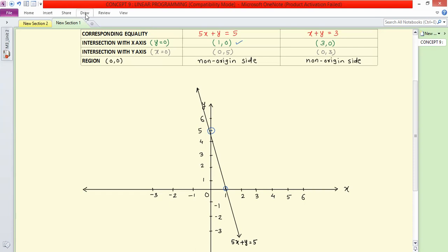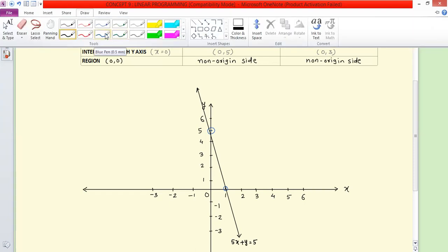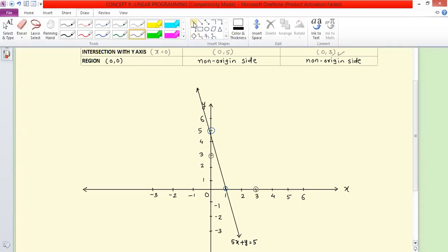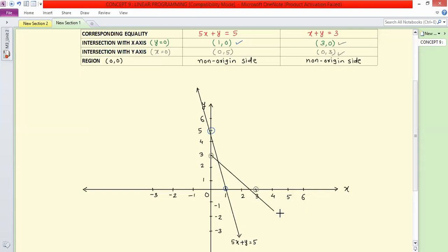Let us draw one line through this. We can extend it a bit. This is the line. This line's equation is 5x plus y equal to 5. Clear? This is the first line. Next, the second line.